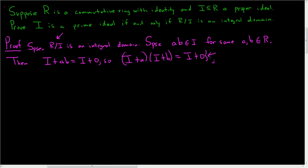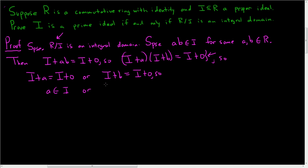And the quotient ring is an integral domain. So that means that I plus a equals I plus zero, or I plus b equals I plus zero. This means that a is in I or b is in I. And so we're done — I is a prime ideal.